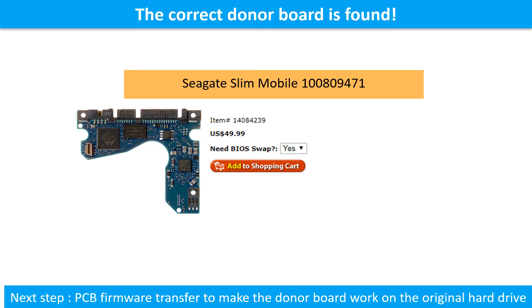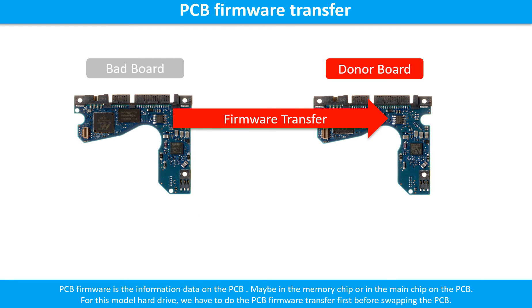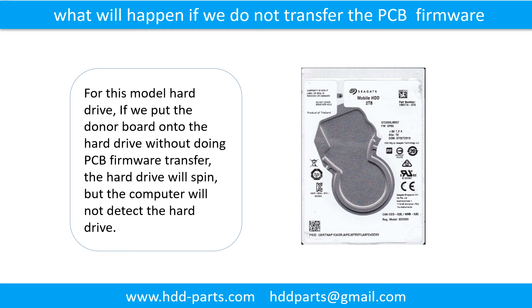We found the correct donor PCB board for the hard drive, but this is only the first step. The next step is we have to do the PCB board firmware transfer to make the donor board work on the original hard drive. PCB board firmware is the information data on the PCB board. It may be in the memory chip or in the main chip on the PCB board. What will happen if we do not do the printed circuit board firmware transfer?